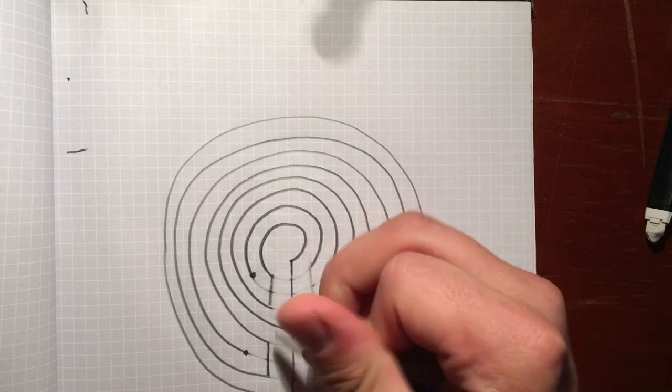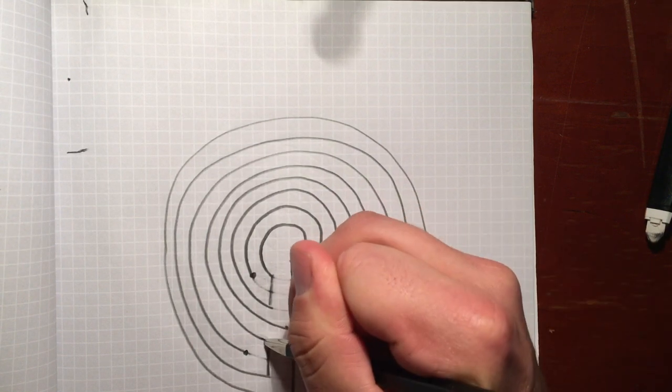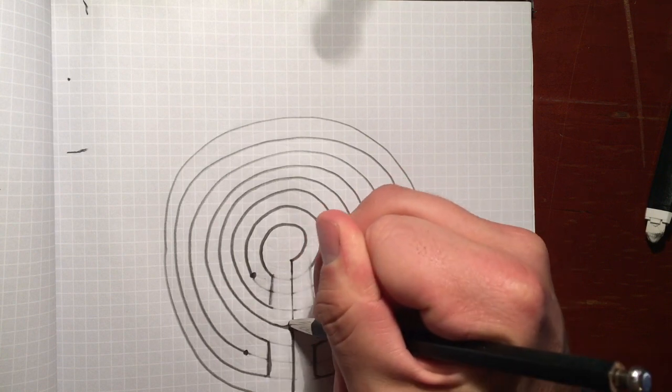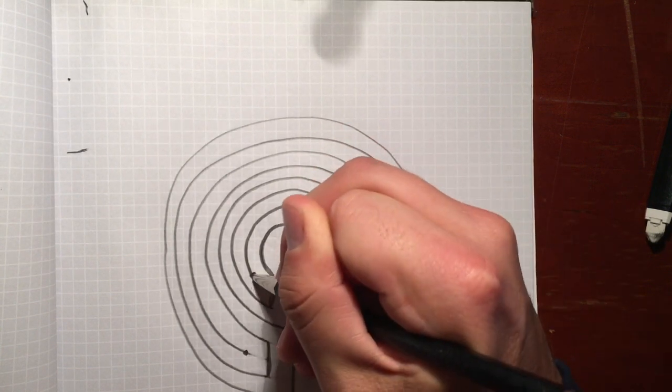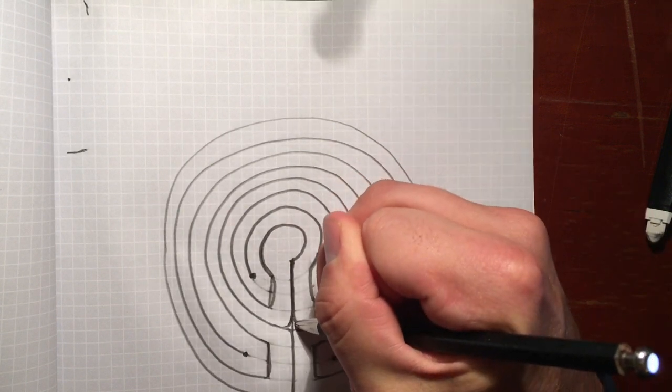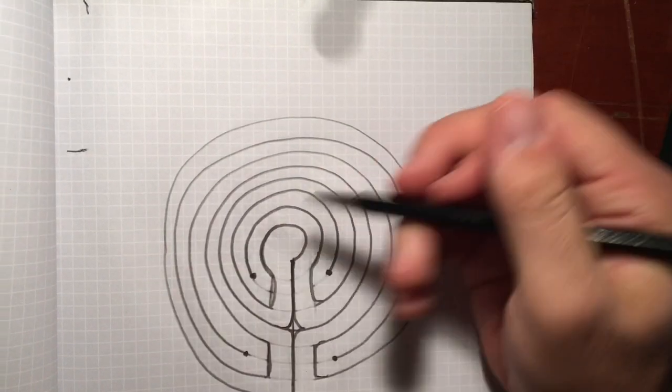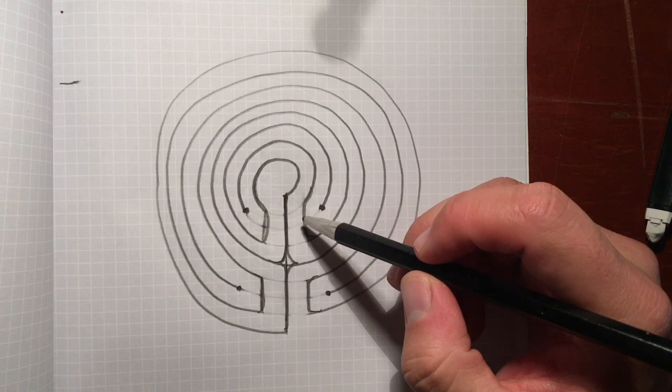A seven-circuit classical labyrinth drawn from a spiral. And this can be really easily laid out full size for a walkable classical labyrinth, either in masking tape or ribbon.